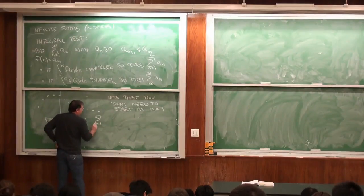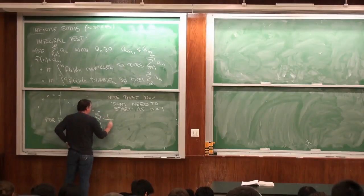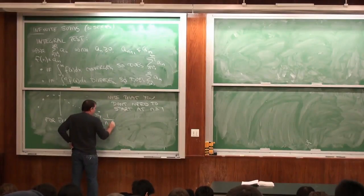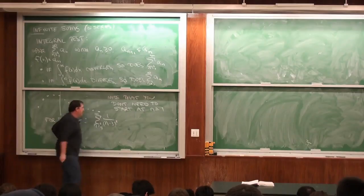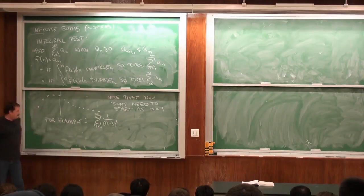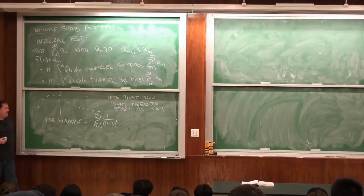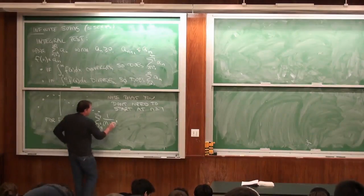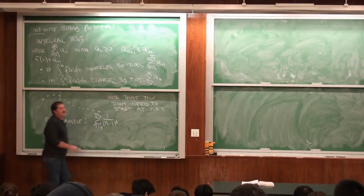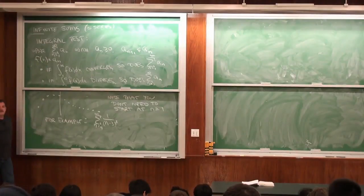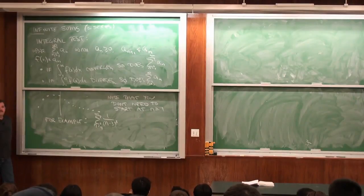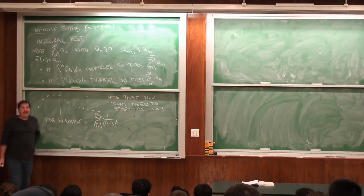For example, if I want the sum from n equals 4 to infinity of 1 over (n minus 3) cubed, we can easily see whether this converges or not. Does this converge and how would I tell?